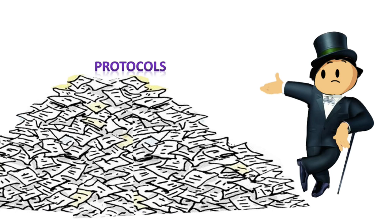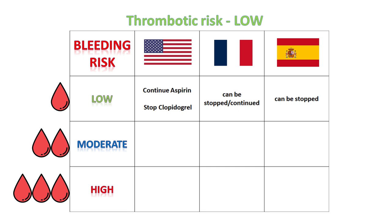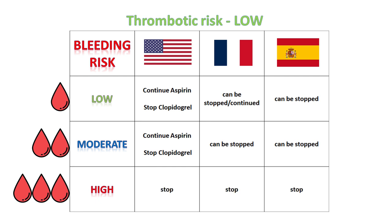For low thrombotic risk patients under antiplatelet for primary prevention: if the bleeding risk is low, the American protocol suggests continuing aspirin and stopping clopidogrel; the French protocol suggests antiplatelets can be stopped or continued; the Spanish says it can be stopped. In moderate bleeding risk, American says continue aspirin and stop clopidogrel; French says it can be stopped; Spanish also says it can be stopped. In higher bleeding risk procedures, all protocols suggest stopping antiplatelet drugs.